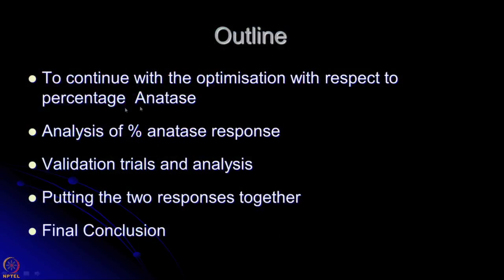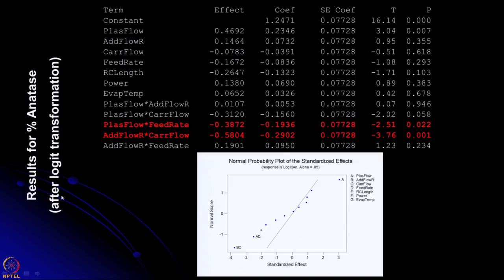You remember there were two responses. This time we want to continue the same process with the response of percentage anatase. Since we are now wiser, and since anatase is also a percentage value, we are going to take its logit transformation and then do the analysis. After the analysis we have validation trials, putting the two responses together to come to the final conclusion for this particular case study. Here is the table for estimating the effect of each parameter using the t-distribution for logit transformed percentage anatase.